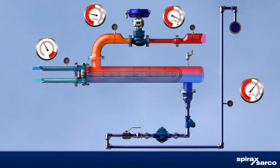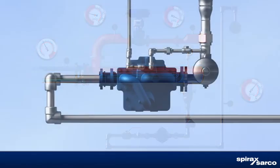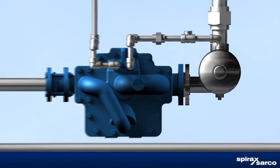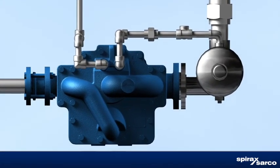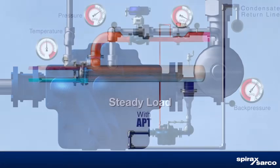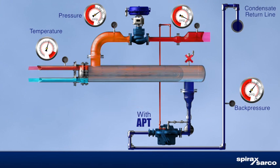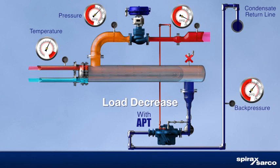The simplest way to cure stall is to install a steam powered automatic pump trap, such as a Spirax Sarco APT series. Pump trap operation is based on condensate level alone, with live steam pressure removing condensate under all load conditions, even vacuum.